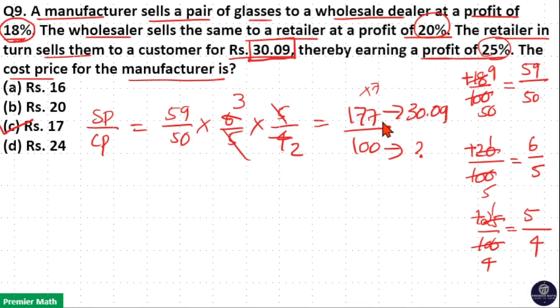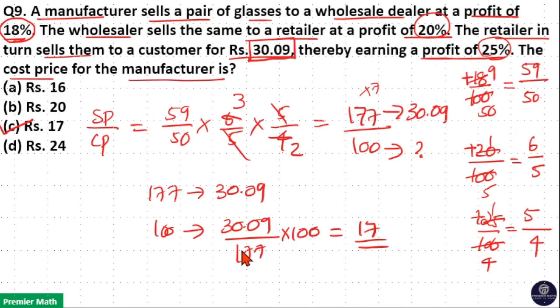So here 177 part is 30.09. Then 100 part is 30.09 divided by 177 into 100. Now 177 goes 17 times in 3009. So option C is your answer.